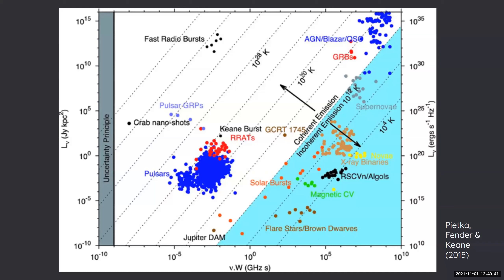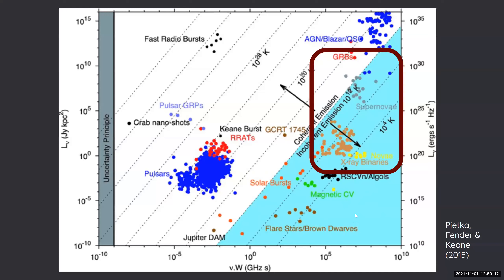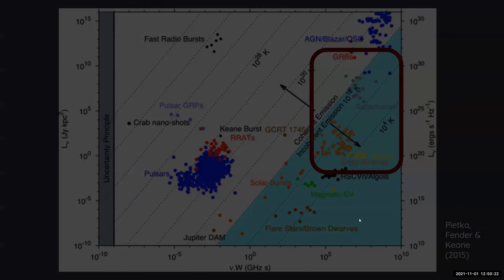Some AGN and GRBs poke a little bit out of this region because they're Doppler boosted towards us. The primary goals of the EHT are the AGN sitting in the top right-hand corner — the big examples being Sagittarius A* and M87. The region of parameter space we're looking at in the transients working group are the rest of the brightest synchrotron sources. We're not looking at coherent objects or at the faintest synchrotron sources like synchrotron emission from flare stars and brown dwarfs.